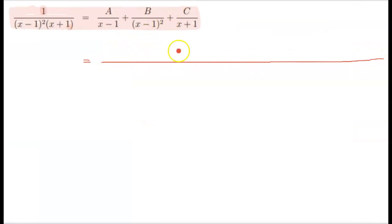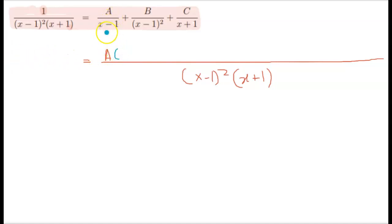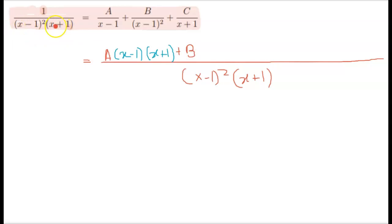First, draw a big line and at the bottom write (x minus 1) squared and (x plus 1). For A: what is missing at the denominator? (x minus 1) is missing, so I need one (x minus 1) and also (x plus 1) — that's your A term done. For B: what is B missing to make the denominator exactly the same? (x plus 1) — so write (x plus 1), I'll write that in blue.